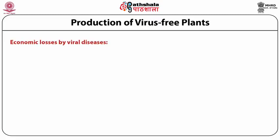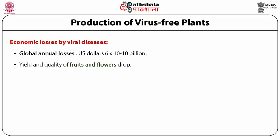Whereas plants infected with fungal and bacterial elements can be rescued from diseases by the application of antibiotics or fungicides, there is no effective method to control viral diseases, although some viricidal compounds have been identified and tried. But this doesn't seem to be a very practical solution. There are tremendous economic losses by viral diseases, and on a global basis the annual losses of crops by viruses are about six times ten billion dollars.